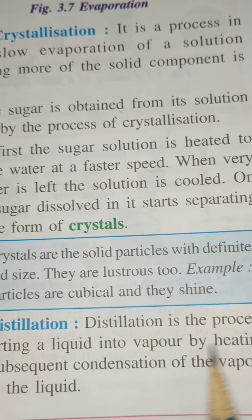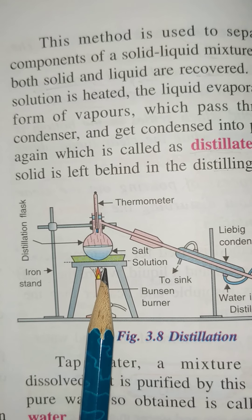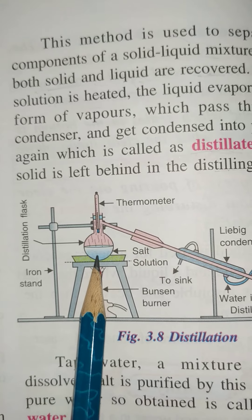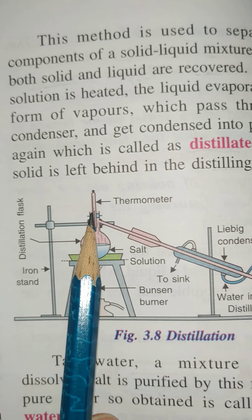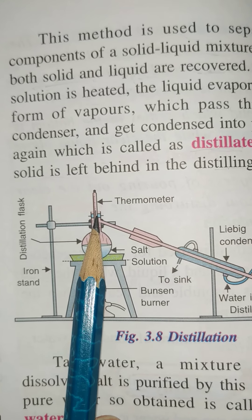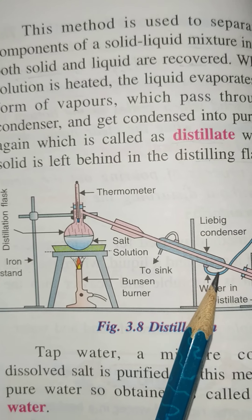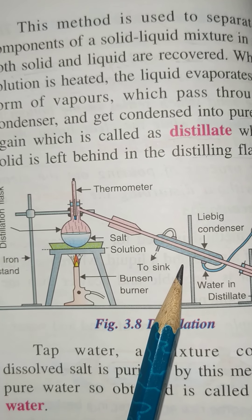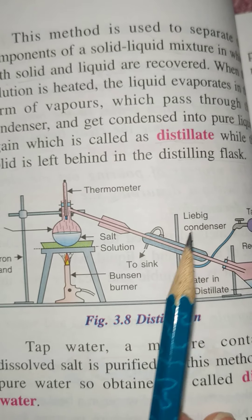We carry out distillation in a distillation flask, which is connected to a Liebig condenser, and we use a Bunsen burner as the heat source. Starting with a salt solution, we heat the mixture so it converts into vapor, then carry out condensation through the condenser to get the liquid back, while the solid is left behind in the distilling flask.